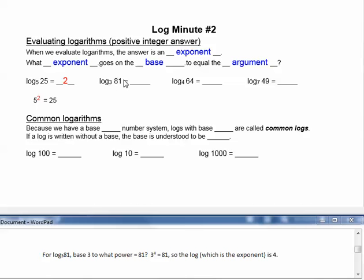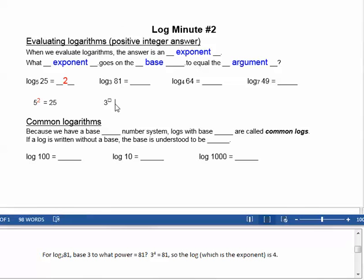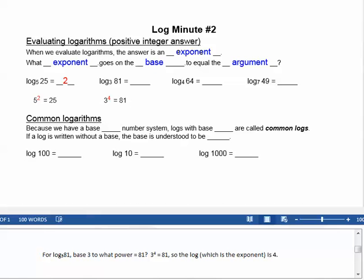For log base 3 of 81, base 3 to what power equals 81? Well, 3 to the 4th equals 81, so the log, which is the exponent, is 4.